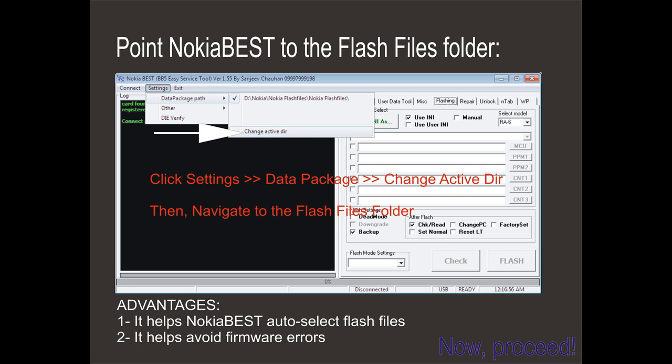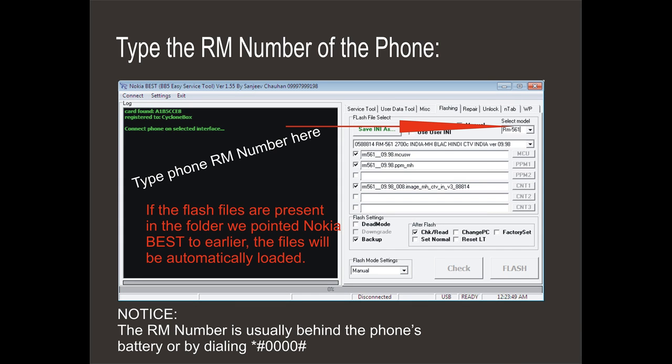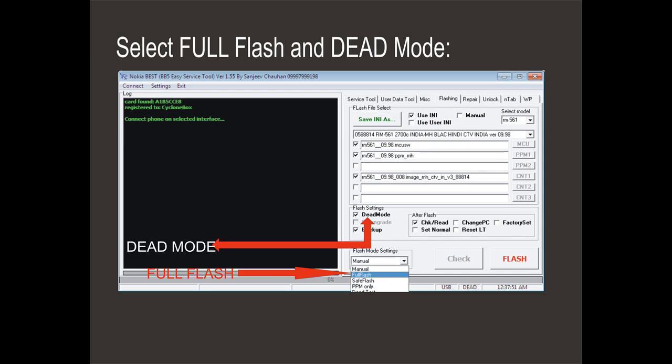Now proceed to flash the Nokia phone. Type the ARAM number for the Nokia phone you want to flash where the arrow points in the image. If the flash files for the phone are present in the folder where we moved all the Nokia flash files, the flash files for the phone we wish to flash will be loaded automatically. Now tick dead mode and select full flash, as shown in the diagram.